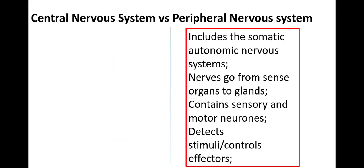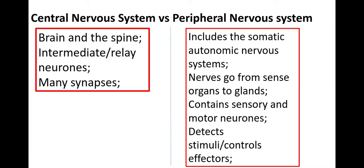Anything in a red box is taken directly from the mark scheme. The central nervous system consists of the brain and the spine, and it consists of relay neurons and has loads of synapses. The peripheral nervous system includes the somatic and autonomic nervous systems — the nerves go from the sense organs to glands, they contain sensory and motor neurons, and they detect stimuli and control effectors.